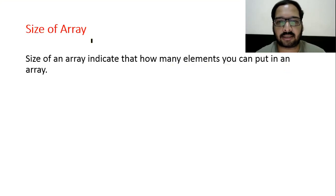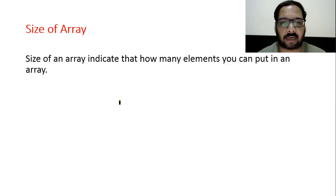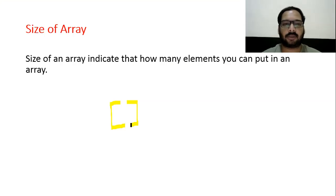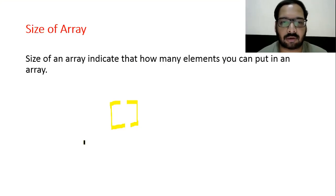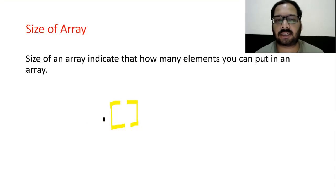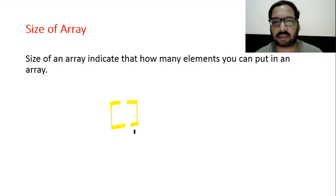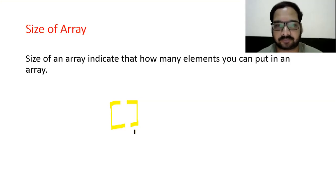Size of array: when you create an array, you mention the size inside square brackets. Square brackets play two roles — sometimes they indicate size and sometimes index. If square brackets are used with a data type, they always indicate size. If square brackets are used without a data type, they always indicate index.